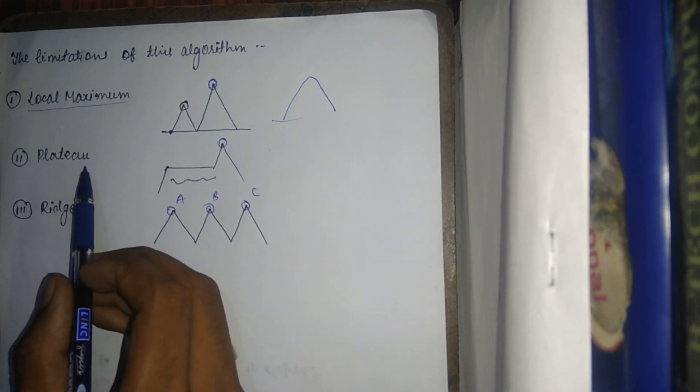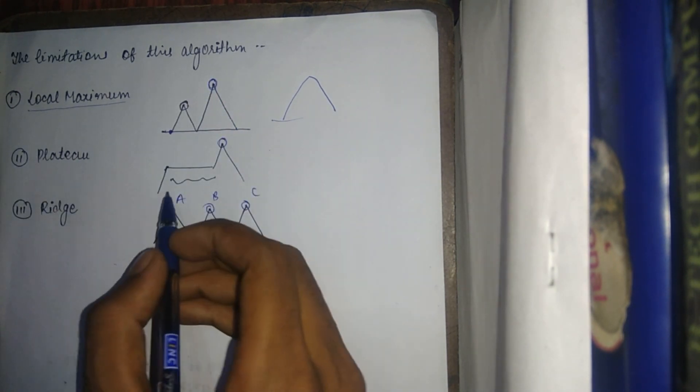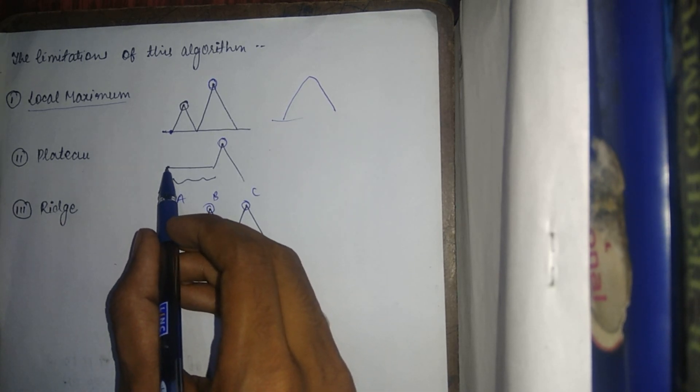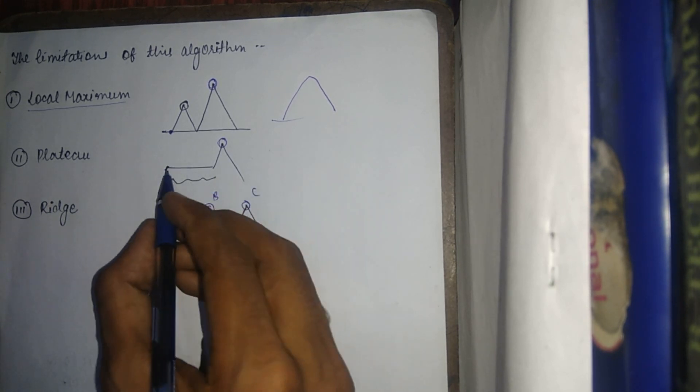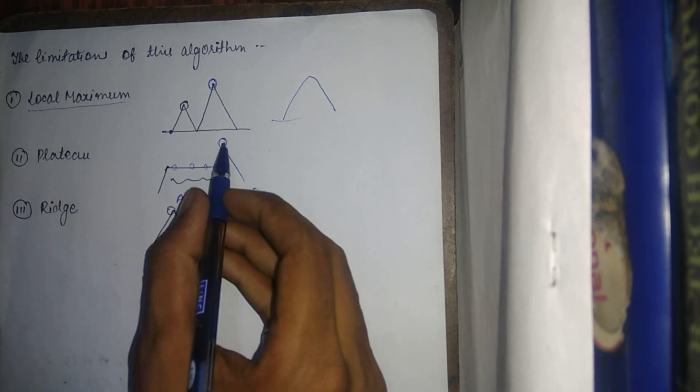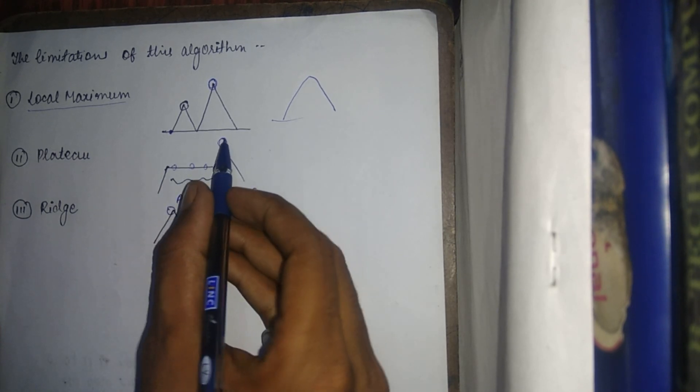The second limitation is plateau. As we can see from the diagram, after a certain point there are many points at the same level. When the algorithm proceeds, it gets the same values for all these points, so it fails and is unable to identify the maximum point.